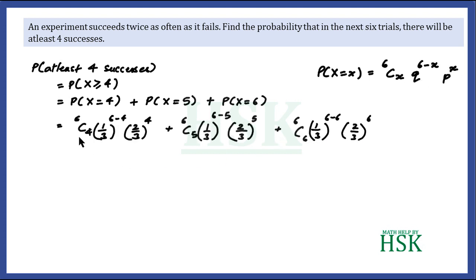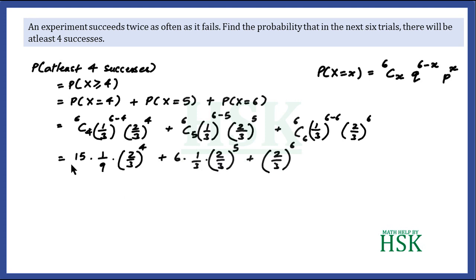The probability of four successes, five successes, and exactly six successes are each computed by placing p = 2/3 and q = 1/3 into the binomial formula. For the four-success term, 6C4 = 15, q^2 = (1/3)^2 = 1/9, and p^4 = (2/3)^4.